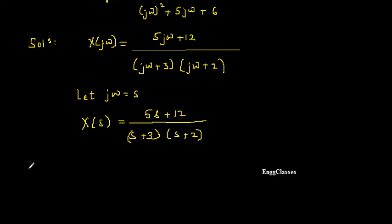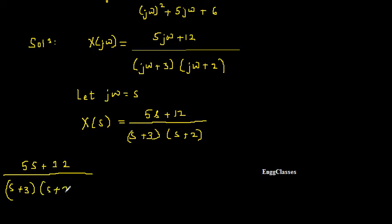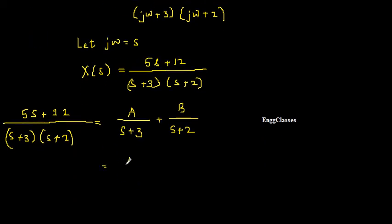This equals A/(s + 3) + B/(s + 2). Taking the LCM and cross-multiplying gives: A(s + 2) + B(s + 3) = 5s + 12. Now I need to find the values of A and B.